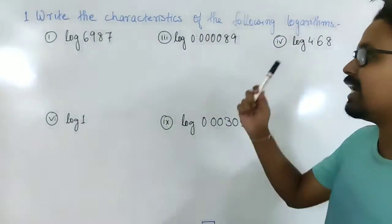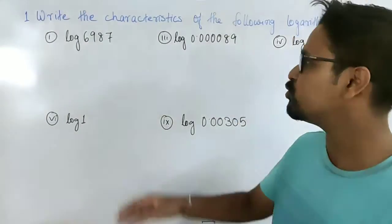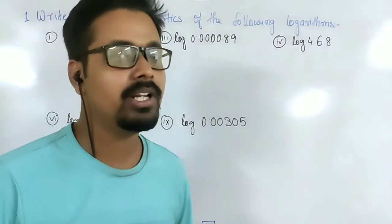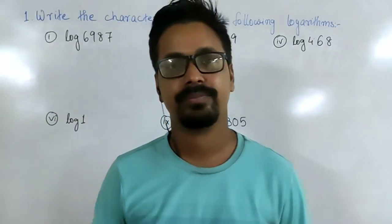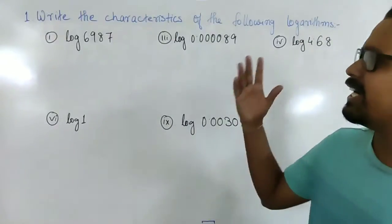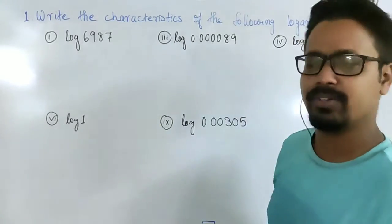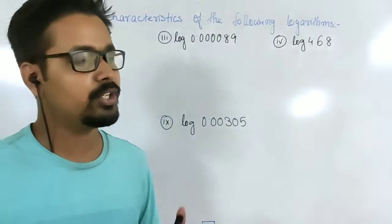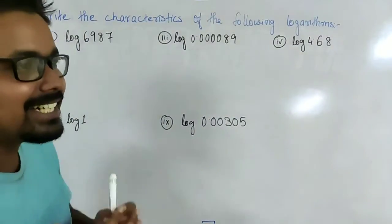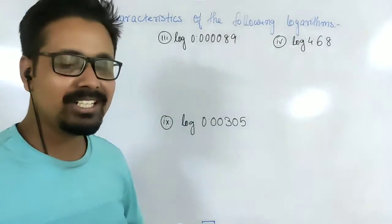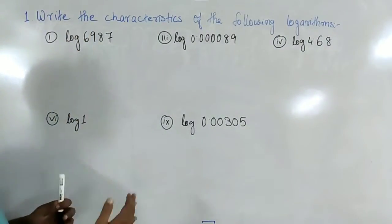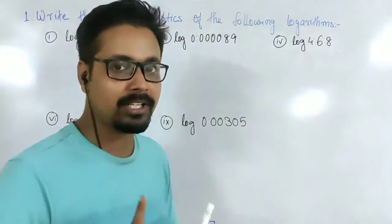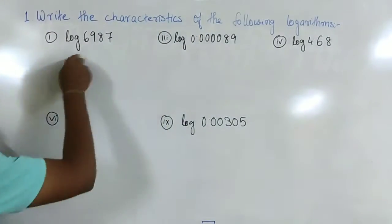We start with Question 1, which asks us to find the characteristics of given logarithms. Characteristic is a simple concept. If the number is greater than 1, the formula is n minus 1, where n is the number of digits before the decimal point. If the number is less than 1, the formula is negative of n plus 1, where n is the number of zeros right after the decimal point.